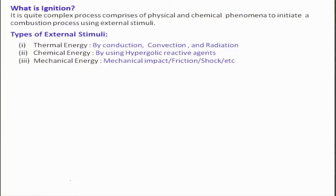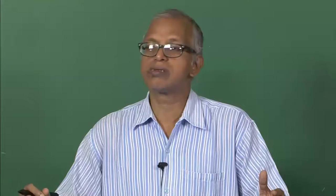Thermal energy can be transferred with the help of three modes: heat conduction, convection, and radiation — it can be a combination of any one or all three. In practical systems all three would be present as both heat loss and heat gain. There is another way of giving external stimuli: chemical energy, by using hypergolic reactive agents. You can give some species or very mobile radicals so that the reaction can occur.